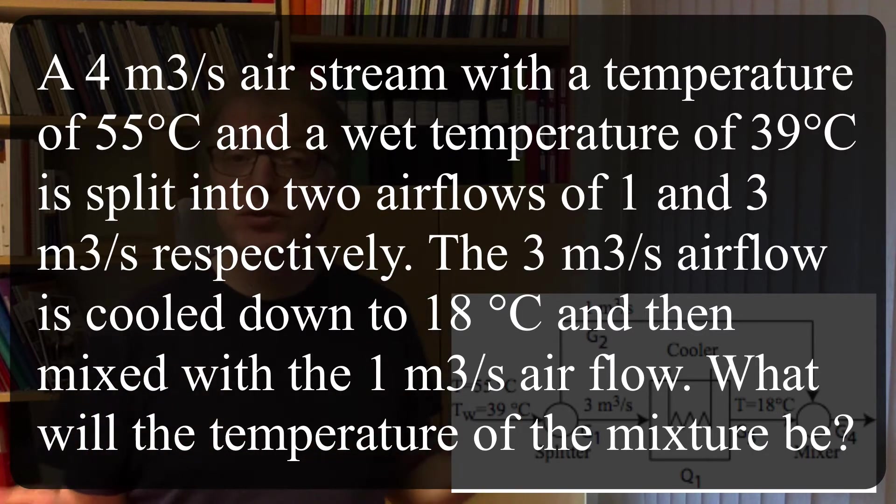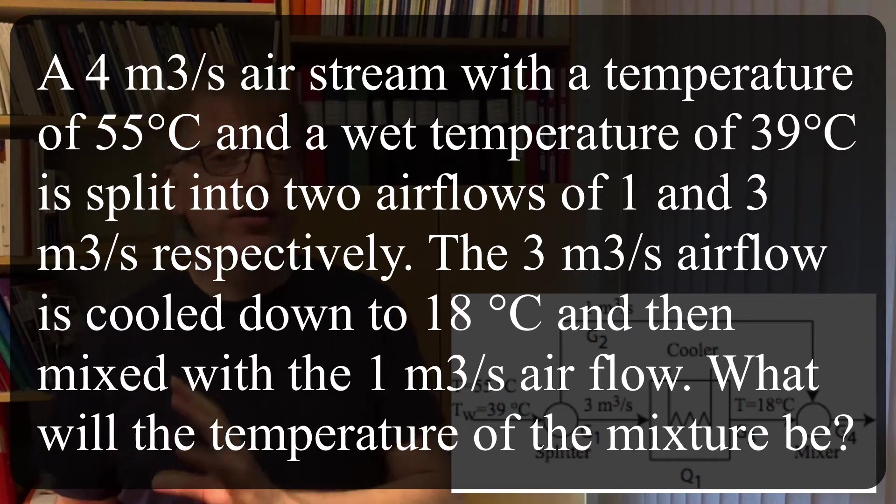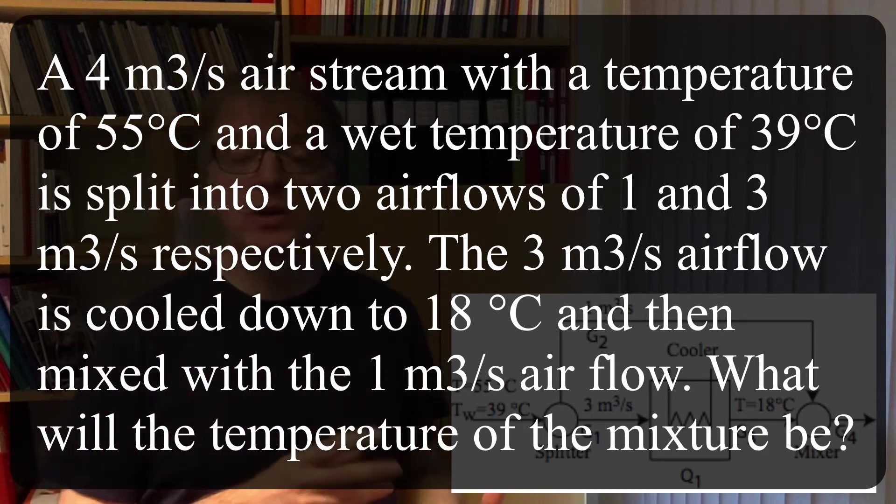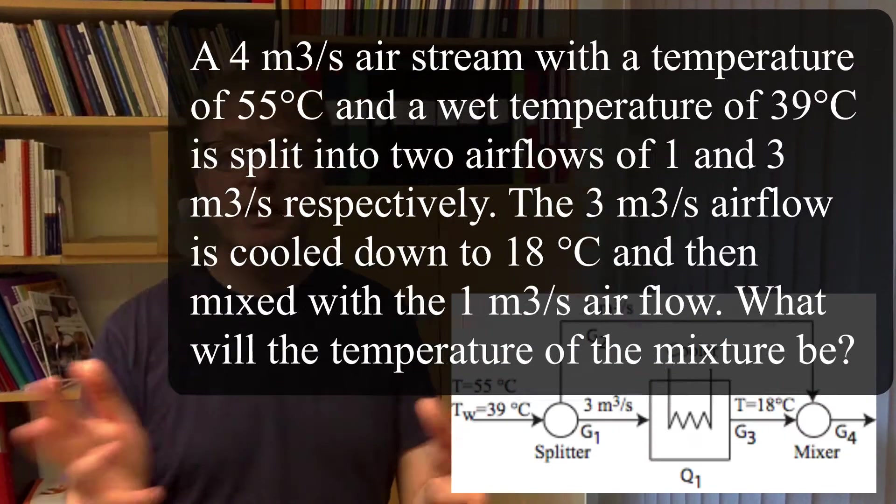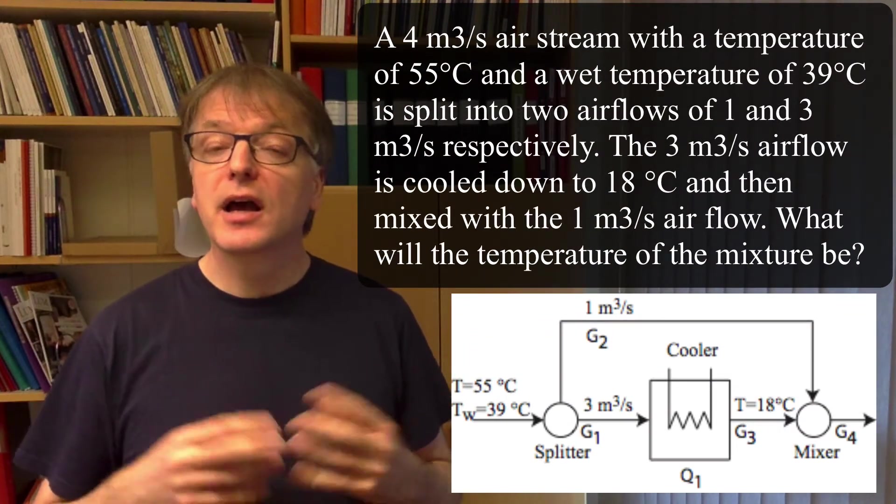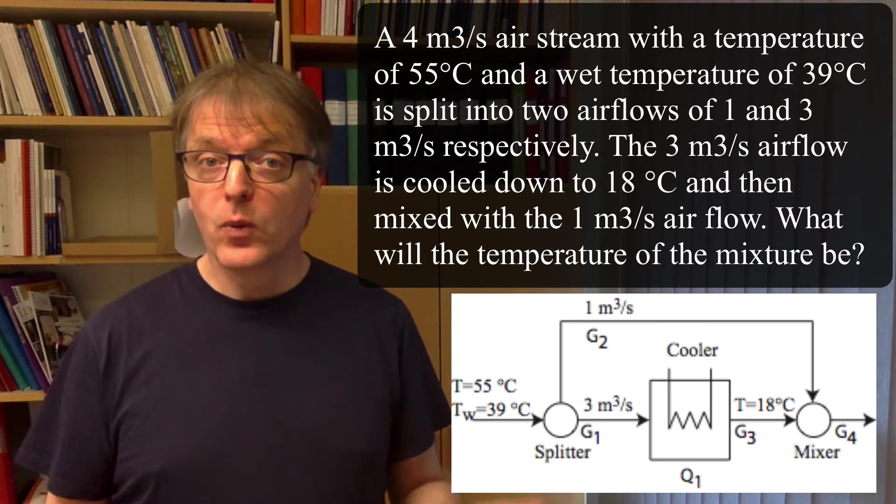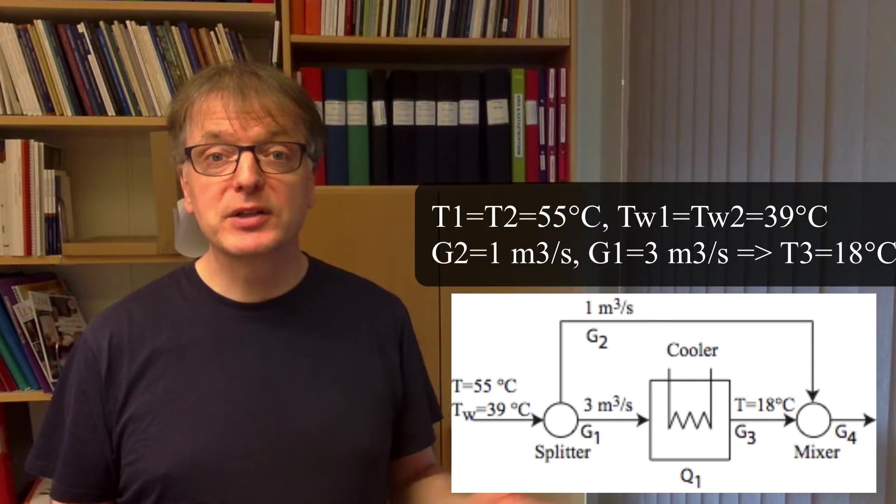And we split that into two: one larger, three cubic meters per second, and one smaller, one cubic meter per second. The larger we cool down to 18 degrees and then we mix the two adiabatically. And the question is, what will the temperature of the mixture be?